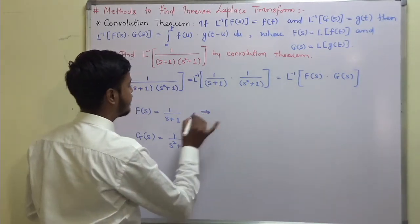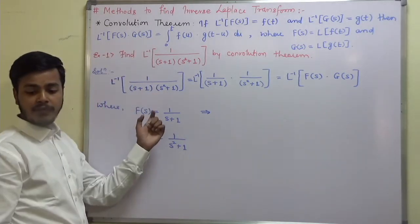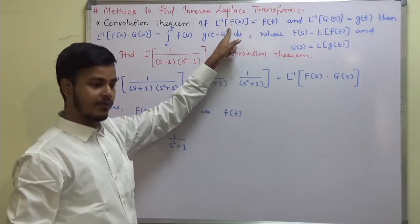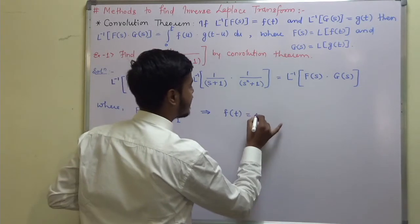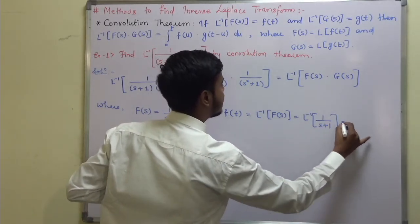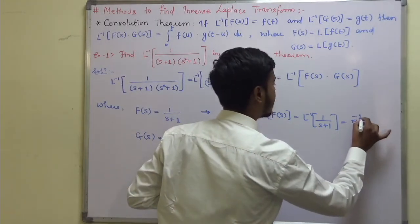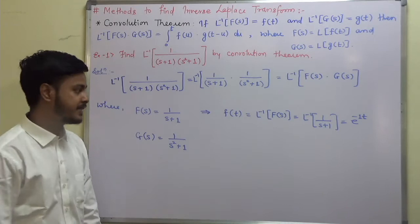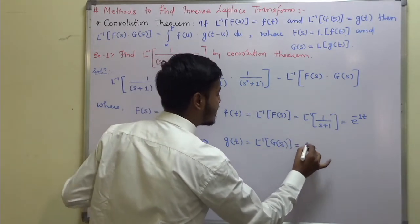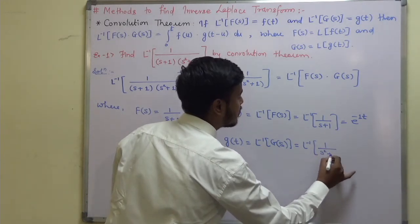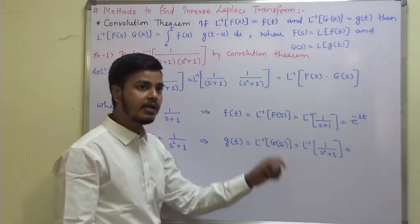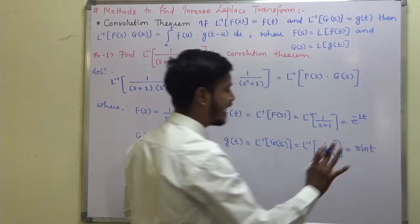Now, with f(s) identified, we can find f(t). f(t) = L-inverse of f(s), which is L-inverse of 1/(s+1), and that equals e^(−t). Likewise, g(t) = L-inverse of g(s) = L-inverse of 1/(s²+1). This is of the form (1/A)sin(At) with A = 1, so g(t) = sin(t). Any doubt up to this?